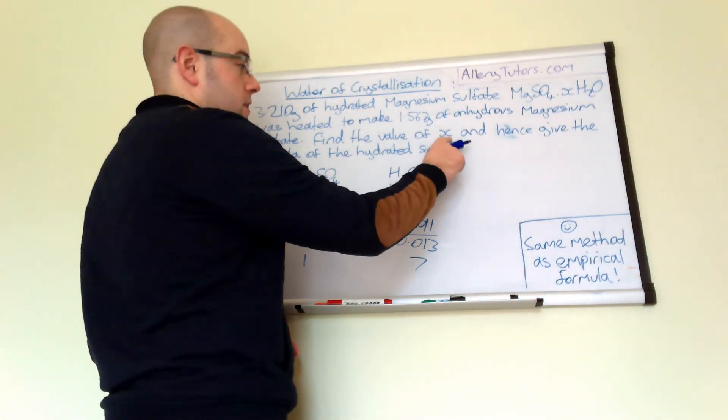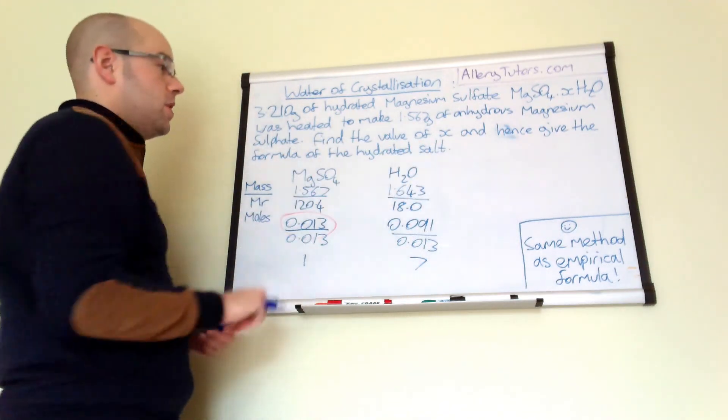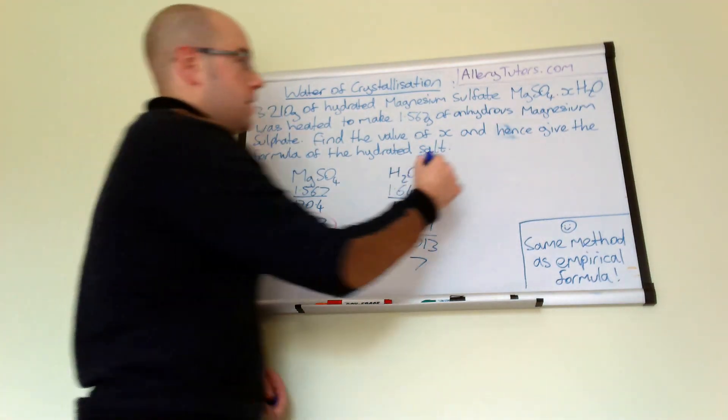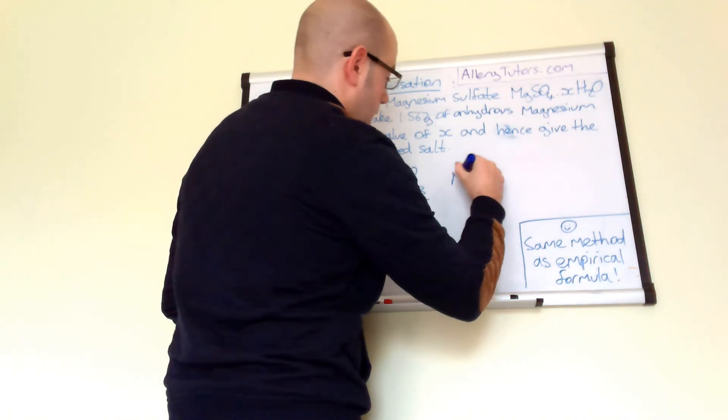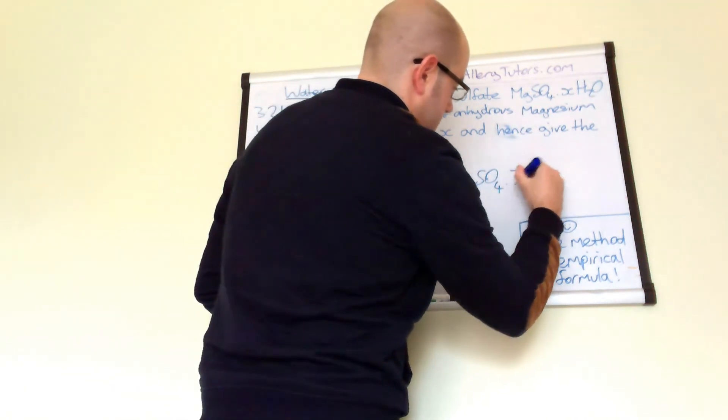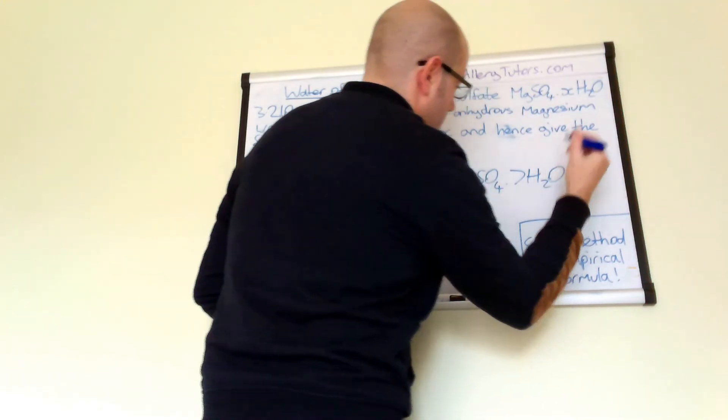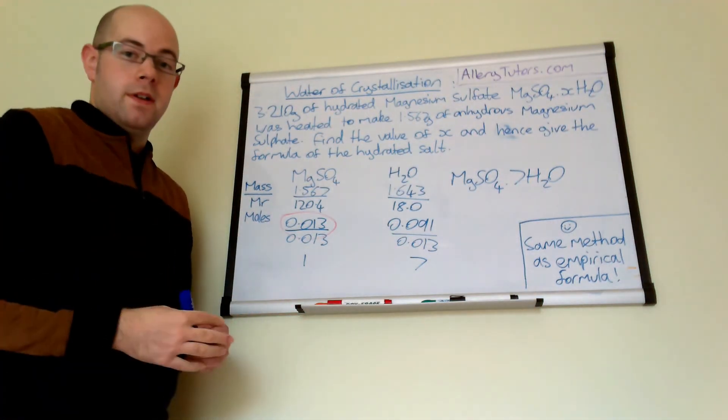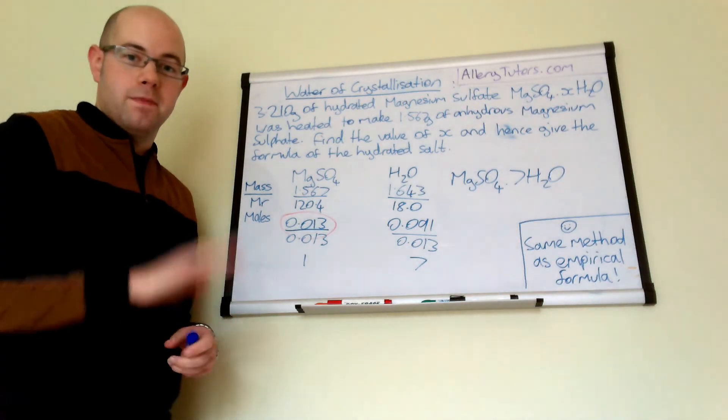And then we can write out our formula, because obviously that's not the answer, because it did ask, that's the value of X, which is 7. But then it says, give the formula for hydrated salts. So I'll write it up here. So it should be MgSO4.7H2O. And there is your formula. Easy. That's it.